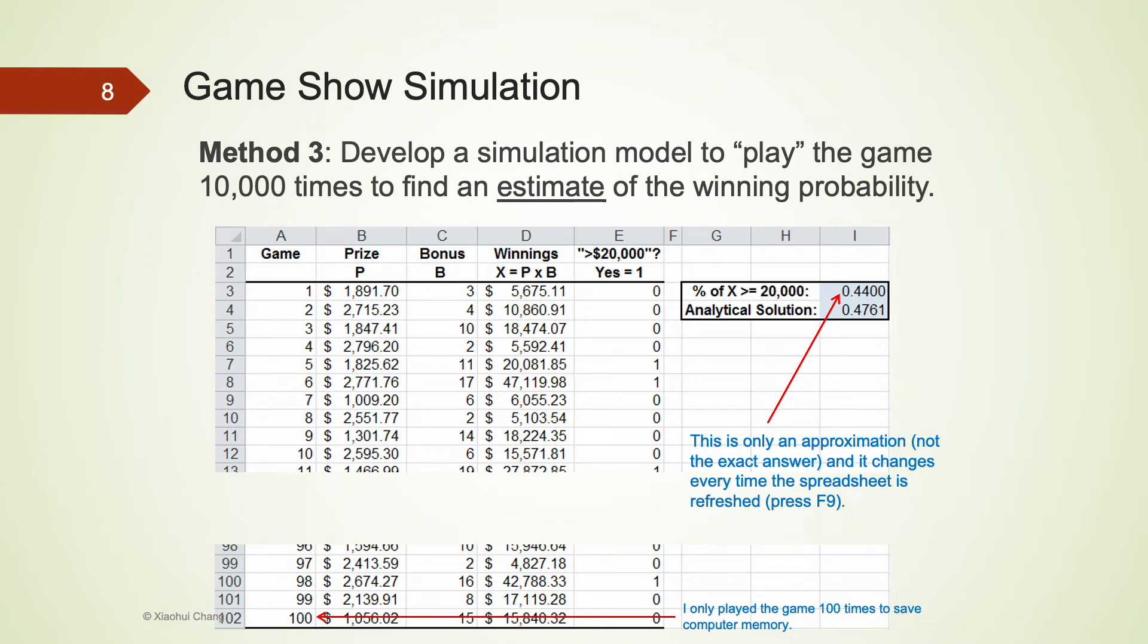The third method is to develop a business simulation model. Try to play the game 10,000 times without physically playing the game, and we try to find an estimate of the winning probability. I'm going to show you how we can simulate this game show problem using two different methods. The first one, using Excel native functions, and the second one, using @Risk functions.